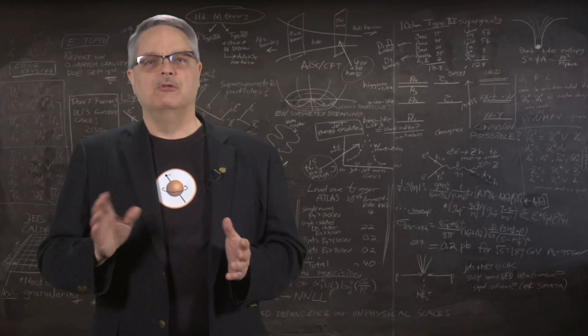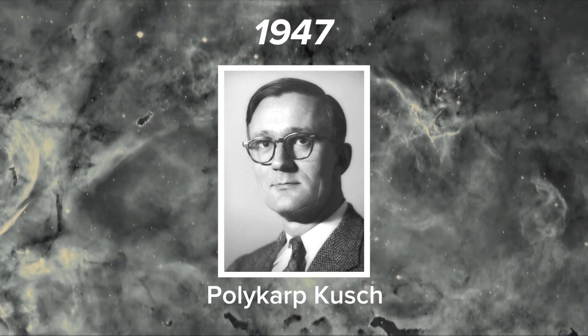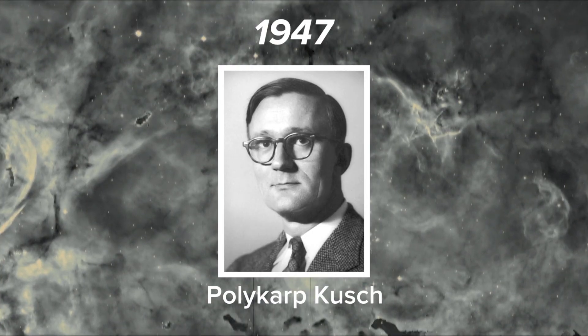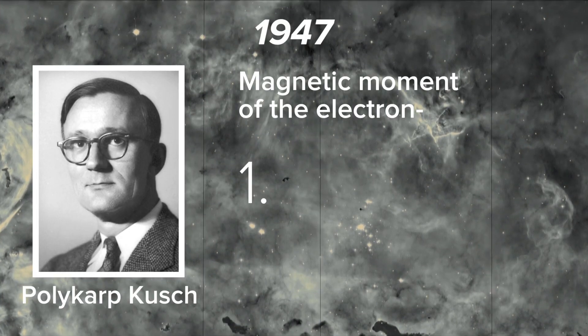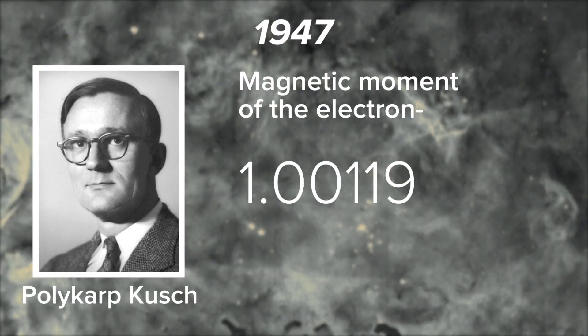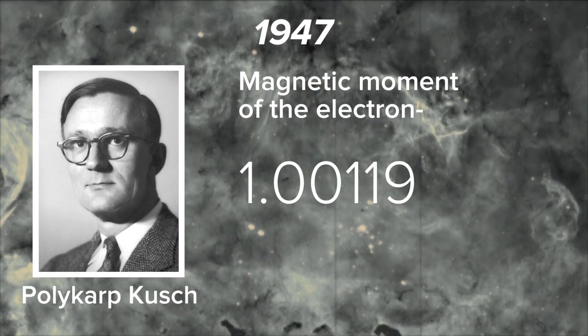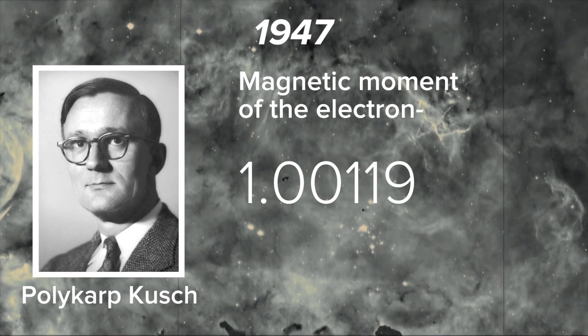In science, prediction isn't good enough. So in 1947, an American physicist with the unlikely name of Polycarp Kusch measured the magnetic moment of the electron and got a number that was 1.00119. So the measured number was very close to one, but different. And his measurement was precise enough that he knew that this wasn't measurement error.